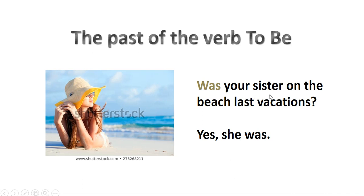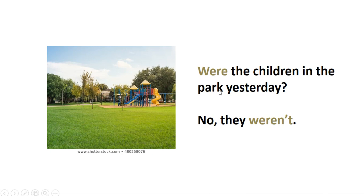Recordemos que generalmente hay confusión cuando vemos el 'your' y lo asimilamos con el verbo en pasado 'were.' Sin embargo, es importante identificar primero quién es el sujeto. En este caso es 'sister' — hace referencia a ella — por esa razón usamos 'was' en lugar de 'were.' 'Were the children in the park yesterday? No, they weren't.' Here the subject is 'children' in plural, that's why we use 'were.'